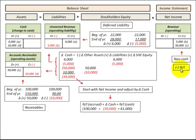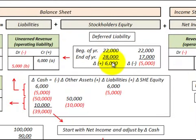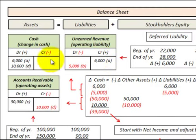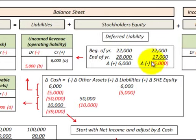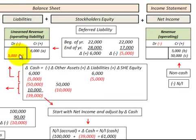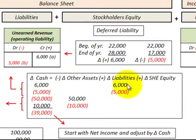Looking at our non-cash revenues that we'd be subtracting from our net income — on the liability side of the equation, that would be a deferred liability, or in this case an unearned revenue. That's where we'd be receiving cash ahead of any revenue recognized as part of net income. So if we had an increase in unearned revenue of $6,000 during the year, we'd increase our unearned revenue by that amount and also increase our cash by that amount. For a reduction of $5,000 in unearned revenue, we'd reduce it by that amount and recognize it as a non-cash revenue as part of net income.